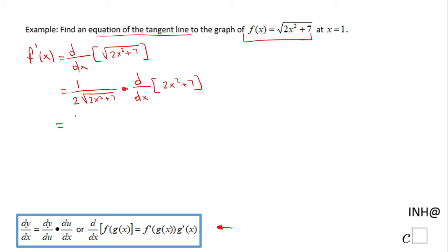So let's do some simplification here. First of all we have 1 over 2 square root of 2x squared plus 7, and then we have here the derivative of 2x squared plus 7, that will be 4x. Of course we can do some simplification here, but don't forget we need to find the slope of the tangent line at x equals 1.